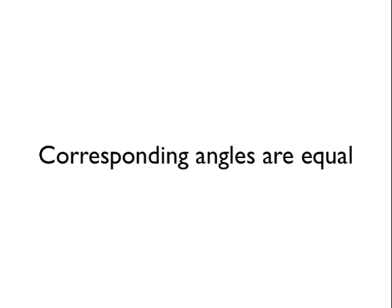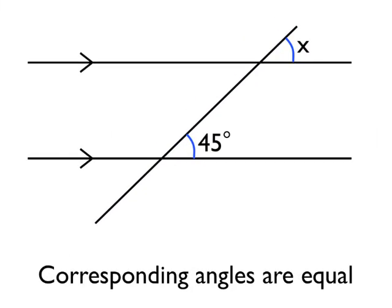So now we know how to find corresponding angles, we just need to learn the angle rule. And it's actually really easy. Corresponding angles are equal. They're exactly the same size as each other. The hardest bit with corresponding angles is actually spotting them in the first place. Once you've actually found a pair of corresponding angles, using the angle rule is really easy.